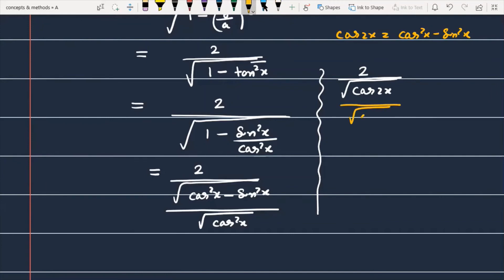This term simplifies further. This will become 2cos x in the numerator, and you can check that in the denominator this is equal to cos 2x. Finally, the value is 2cos x/√(cos 2x).